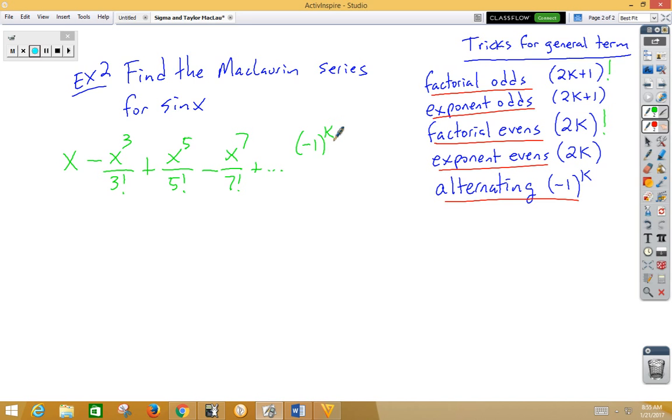Also, if we look at our exponents, our exponents are odd, so when I put in my x, I'm going to want to have a 2k plus 1. Lastly, I notice again that my exponents match my factorial on the bottom, so I'm going to want to have a 2k plus 1 factorial on the bottom.